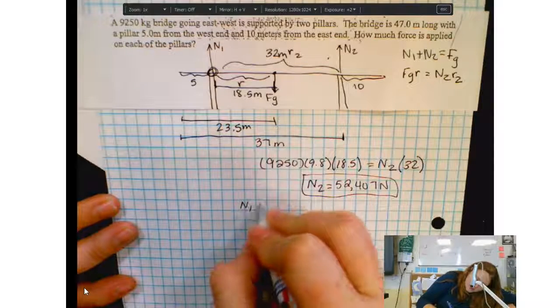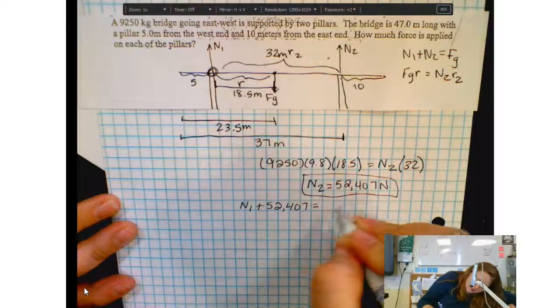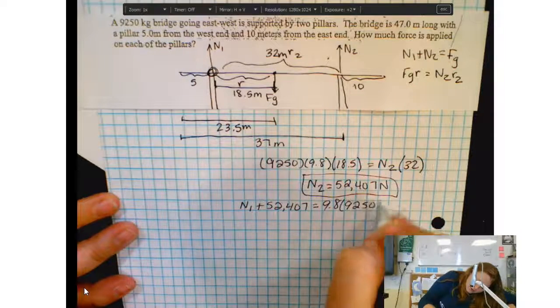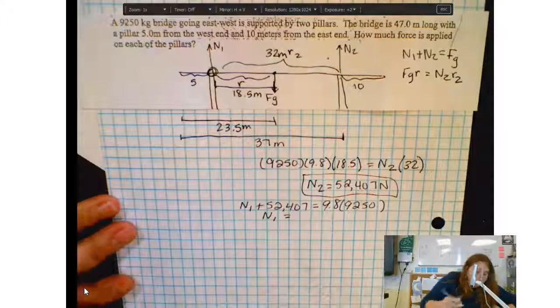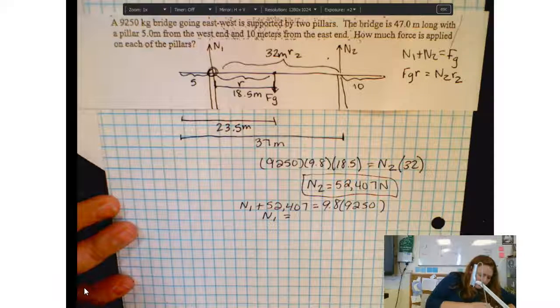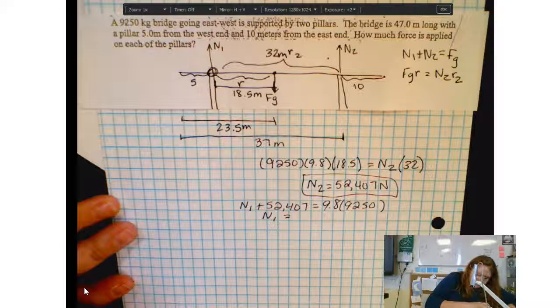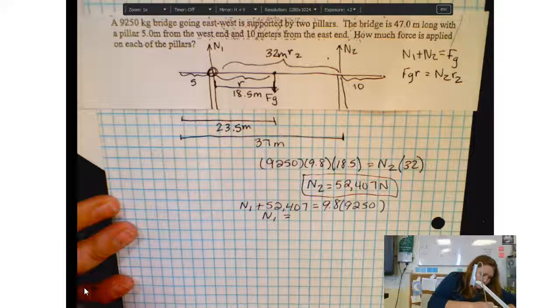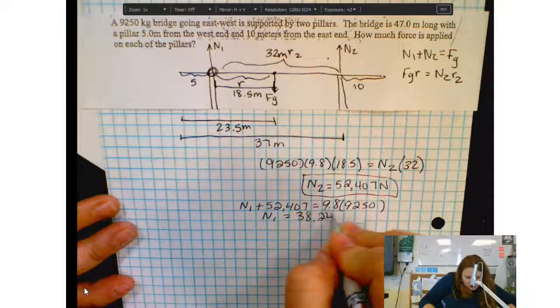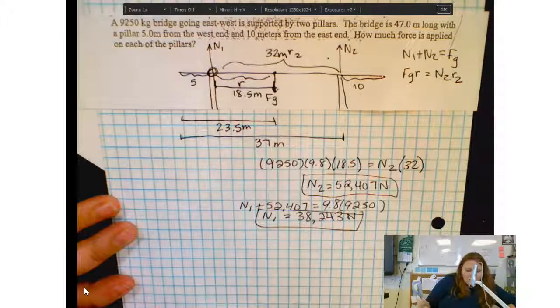Now I'm going to use this equation. N1 plus 52,407 newtons has to equal the force of gravity 9,250 times 9.8. So N1 is going to equal 9.8 times 9,250 minus 52,407. 38,243 newtons. And there's my two normal forces.